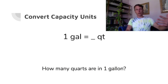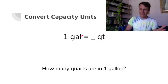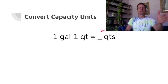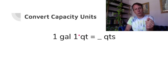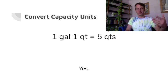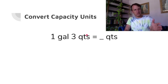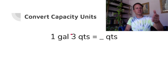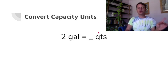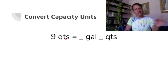Let's start with an opening review — just remembering how many of what's in what. One gallon is four quarts. So if you have one gallon and one quart, that gives you a total of five quarts. One gallon and three quarts would be seven quarts — four in that gallon plus three more. Two gallons is eight quarts.